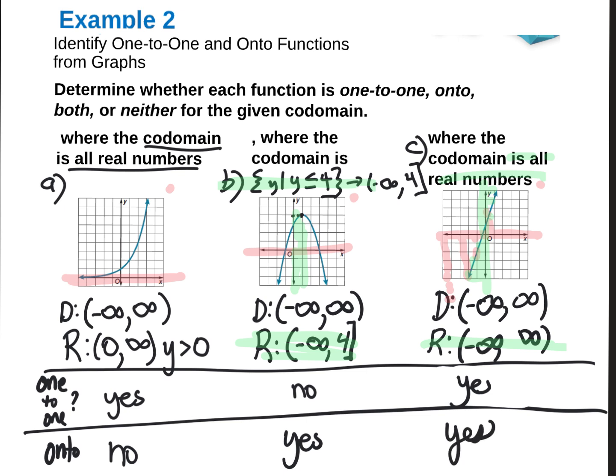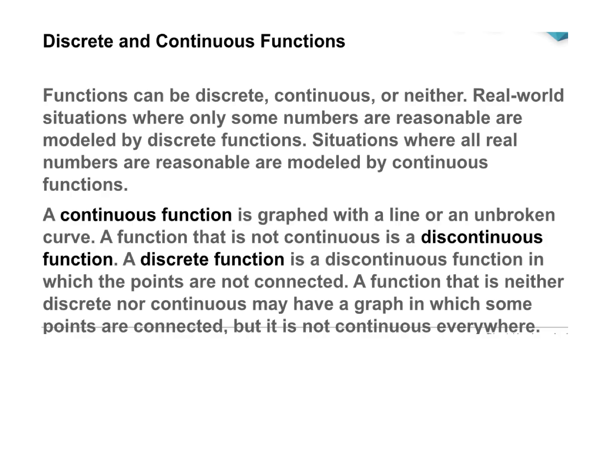That's how you tell the difference between one-to-one and onto. Please read the first paragraph about discrete, continuous, or functions that are neither of those. Write down the definition for a continuous function and a discrete function — you do not have to write down the definition for a discontinuous function. Pause the video if you need to.